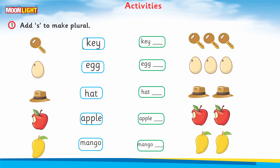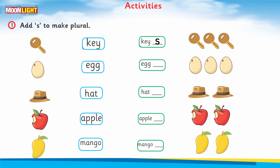In the previous video I told you that if a thing is more than one, it will be plural. So we place the letter 's' with plural nouns. Key is already written — K-E-Y — and there is a space, so you write the letter 's'. The word becomes 'keys'. The first one is 'key' and after writing the letter 's' it becomes 'keys'.